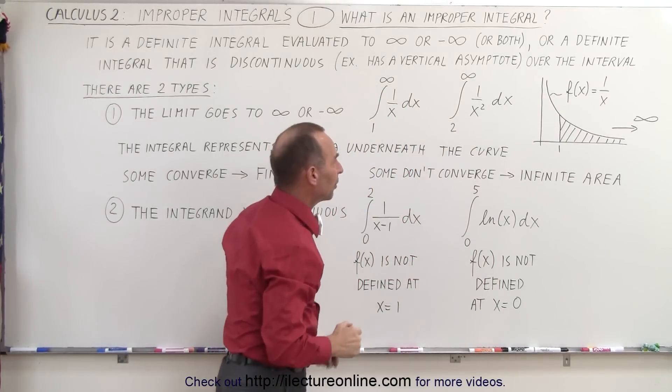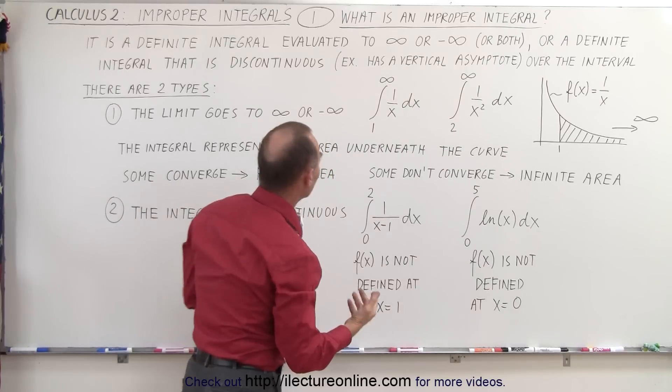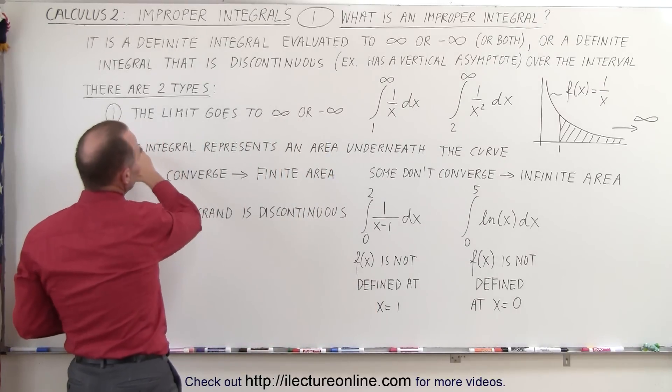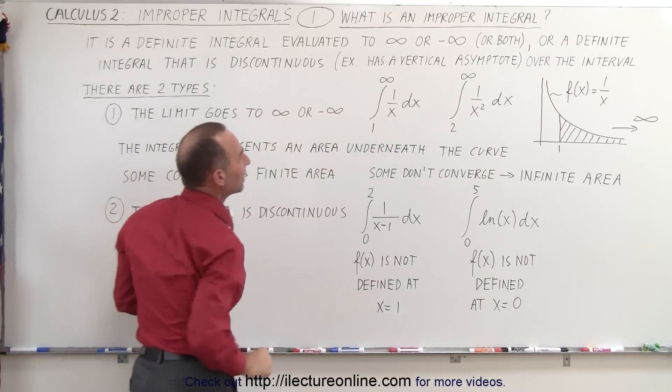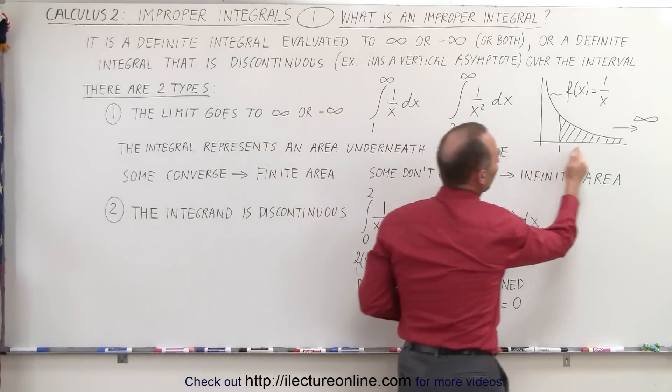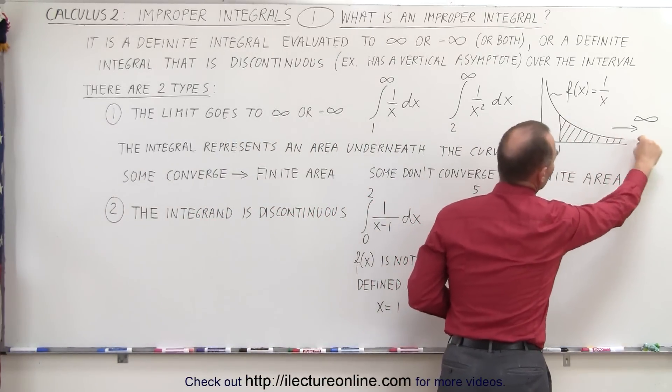Therefore, it's called an improper integral. And so really what we're doing here is we're trying to find the area underneath that curve from 1 all the way up to infinity. How much area is there?